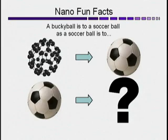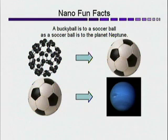Many of the exciting real potential applications of nanotechnology involve an important molecule called a buckyball, or a fullerene. A buckyball is composed of 60 carbon atoms bonded together in the shape of a soccer ball. If you magnify a buckyball to the size of a soccer ball and magnify a soccer ball the same relative amount, the new size of the soccer ball would be the planet Neptune — which means a soccer ball is a lot bigger than a buckyball.